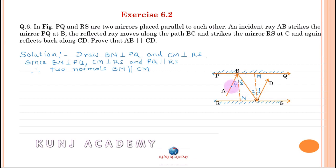By the law of reflection, angle of incidence equals angle of reflection. Therefore angle 4 equals angle 3. Similarly, angle 2 equals angle 1. Since BN is parallel to CM and BC is a transversal, therefore angle 2 equals angle 3 — alternate angles.